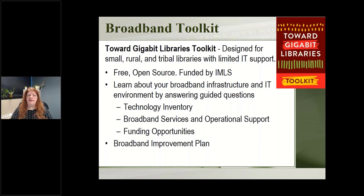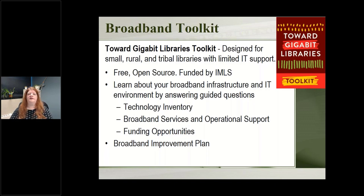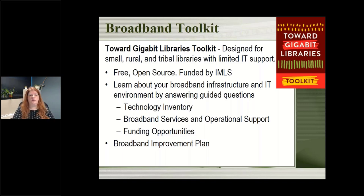The Toward Gigabit Libraries Toolkit is free and available online — we have a link from our E-Rate website. It was funded by a grant from the IMLS, the Institute of Museum and Library Services, and has recently been updated with a new grant. It will provide you with a plan to improve your setup if needed and increase speed — for example, noting that your router is too old and should be upgraded. We highly recommend downloading the document and going to your network closet with whoever helps with your IT.